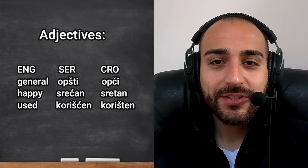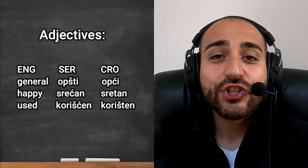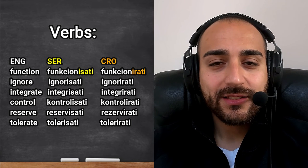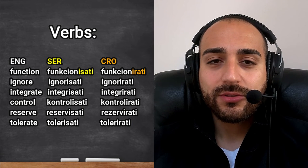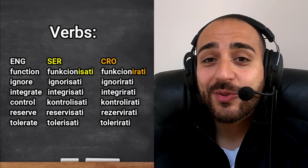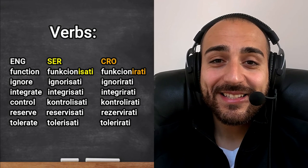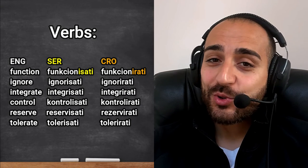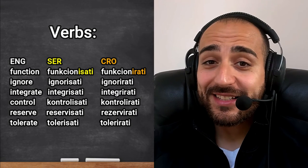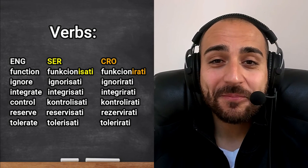Adjective differences: general — 'opšti' vs 'opći'; happy — 'srećan' vs 'sretan'; used — 'korišćen' vs 'korišten'. For verbs, some verbs that end in '-isati' in Serbian have Croatian counterparts ending in '-irati': functionisati vs funkcionirati; ignorisati vs ignorirati; integrisati vs integrirati; kontrolisati vs kontrolirati; rezervisati vs rezervirati; tolerisati vs tolerirati.